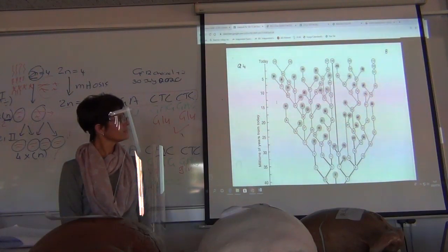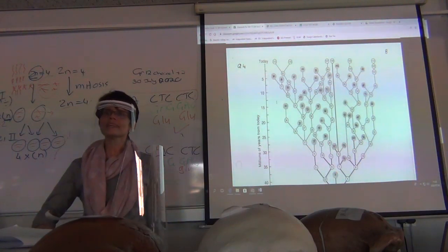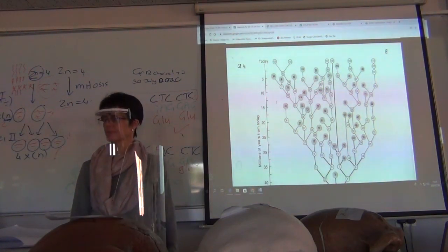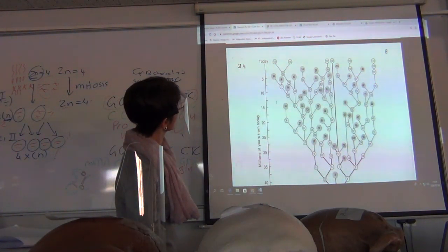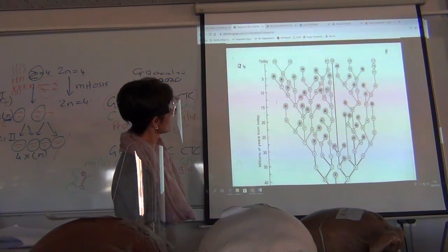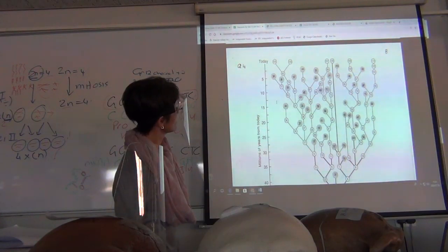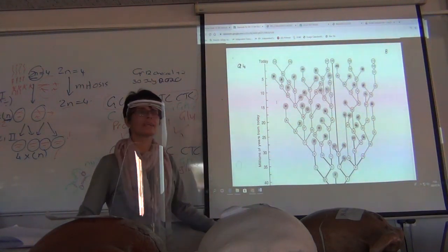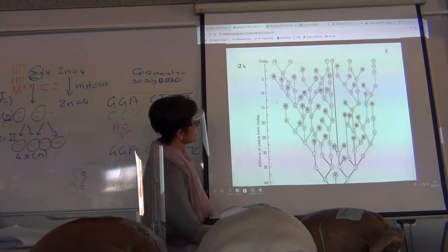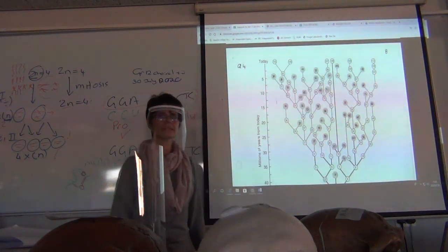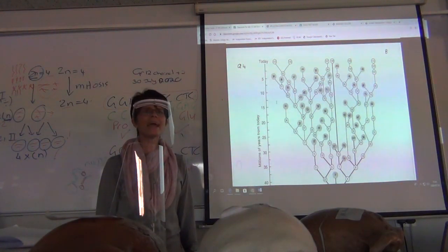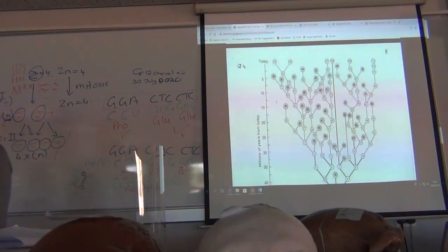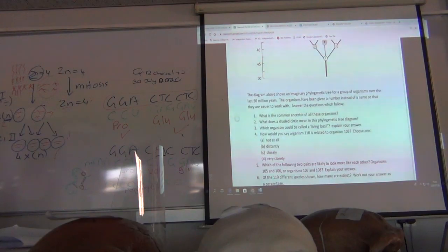How would you say organism 110 is related to organism 105? Is it not related distantly, closely, or very closely? All the way back to number one, but they are very distantly related. All right, question number five. Which of the two pairs are more likely to look like each other? Organisms 105 and 6 or 107 and 8? 105 and 6. Why? Because they're from the same number 92. And what is number 92? A more recent common ancestor.